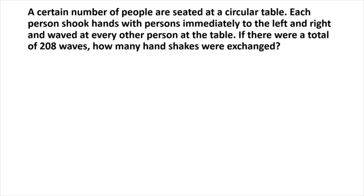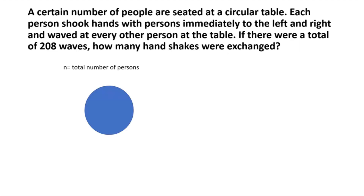This is a problem of circular arrangement that is best solved by using a figure or diagram representing the circular arrangement, because the way to approach the problem becomes much clearer and easier that way. So let's draw out a circular table. Remember there are n persons — we assume n is the total number of persons since we are not given that number. When dealing with circular arrangements, it's best to focus on a particular person seated at the table and look from that perspective how the arrangement pans out.